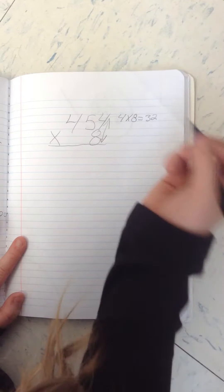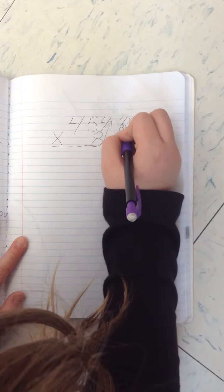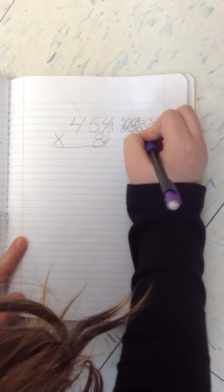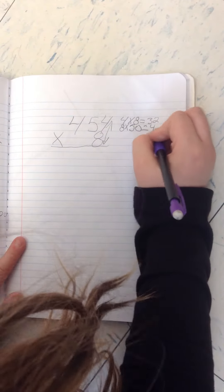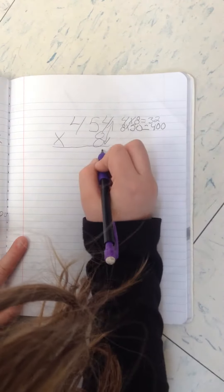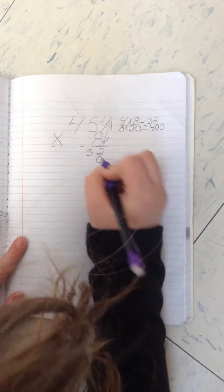Then you multiply 8 times 50, which that equals 400. So first you got to put the 32 down here and then the 400.